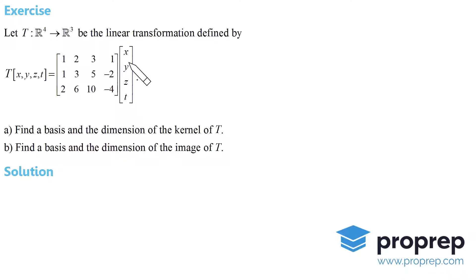This will be a three-dimensional vector because this has three rows and four columns, and this has four rows and one column, so we'll end up getting three rows and one column. What we have to do is find a basis and the dimension of the kernel of T, and likewise for the image of T.